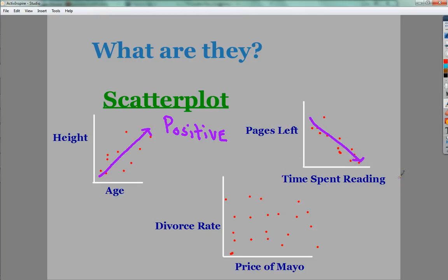As one number increases, the time spent reading, the pages left decreases. That's a negative relationship just because one goes up and the other goes down. If they both go up, it's positive.